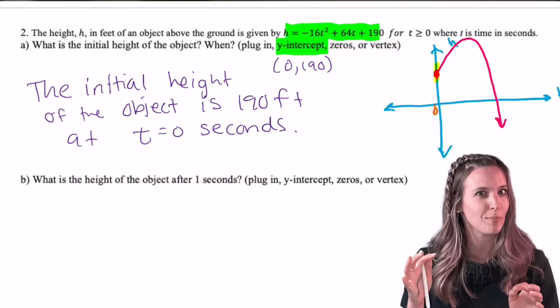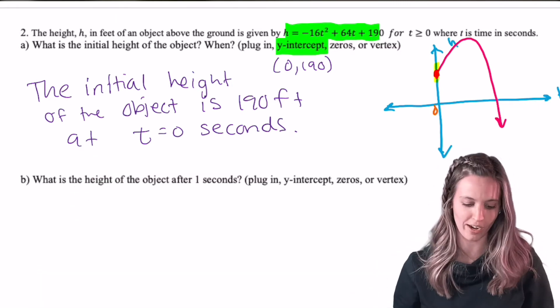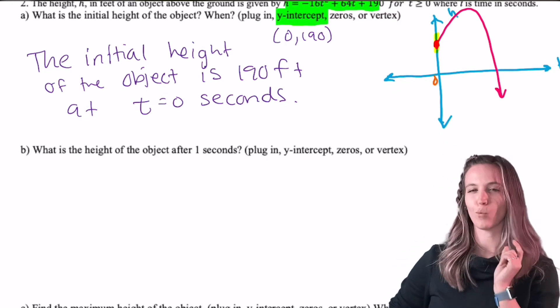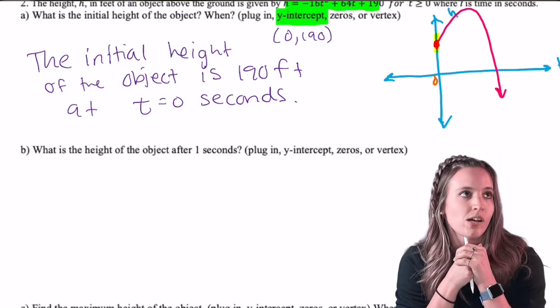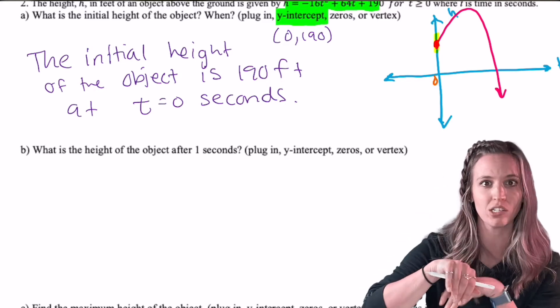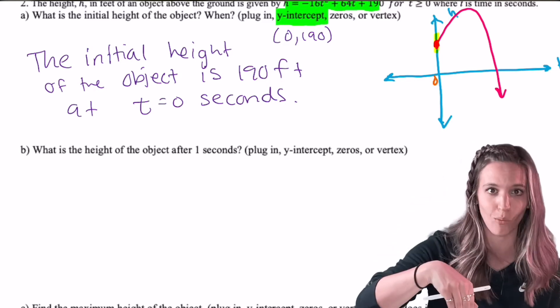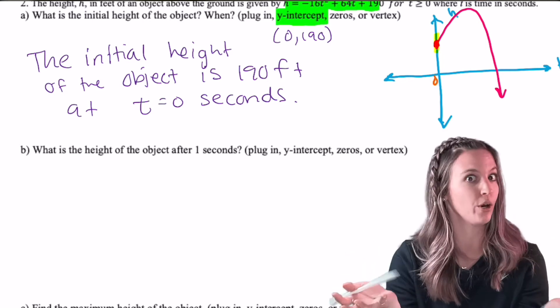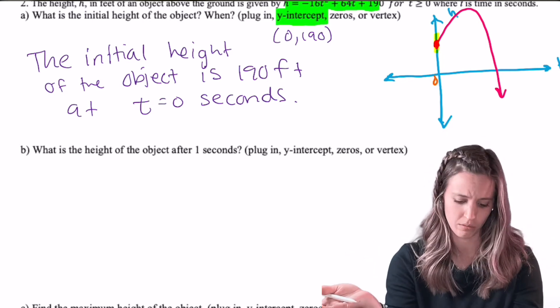So initial height is kind of a buzzword for y-intercept. Let's try another one. What is the height of the object after one second? So one second, that's time, that's my input. So all I'm doing is going to input one second to get my output the height. So what am I going to do here? Plug in.